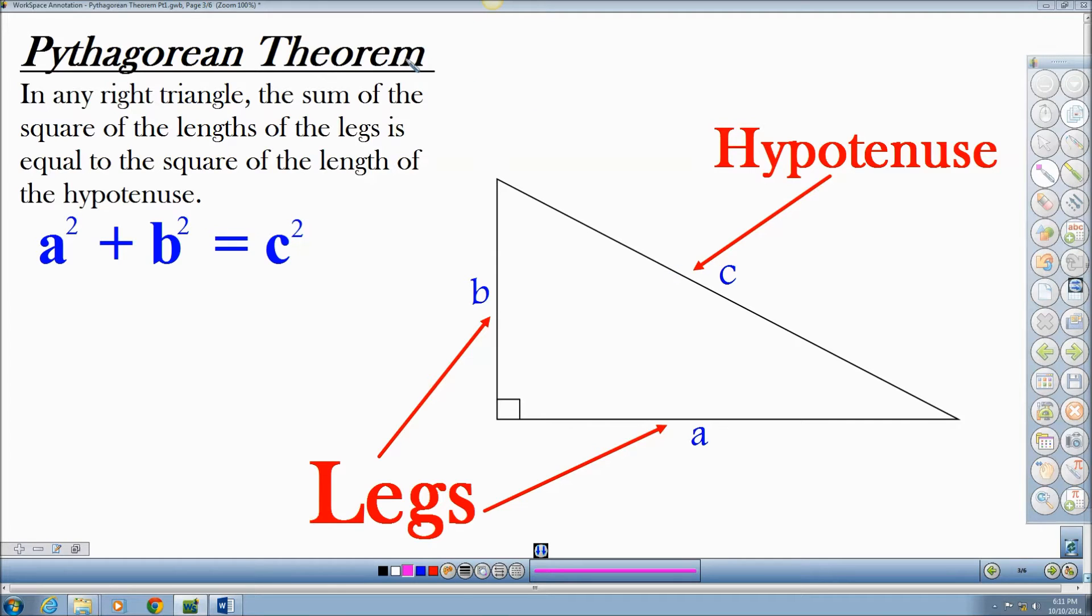The Pythagorean Theorem states that in any right triangle, the sum of the square of the length of the legs is equal to the square of the length of the hypotenuse. Okay, let's discuss what these three words mean.